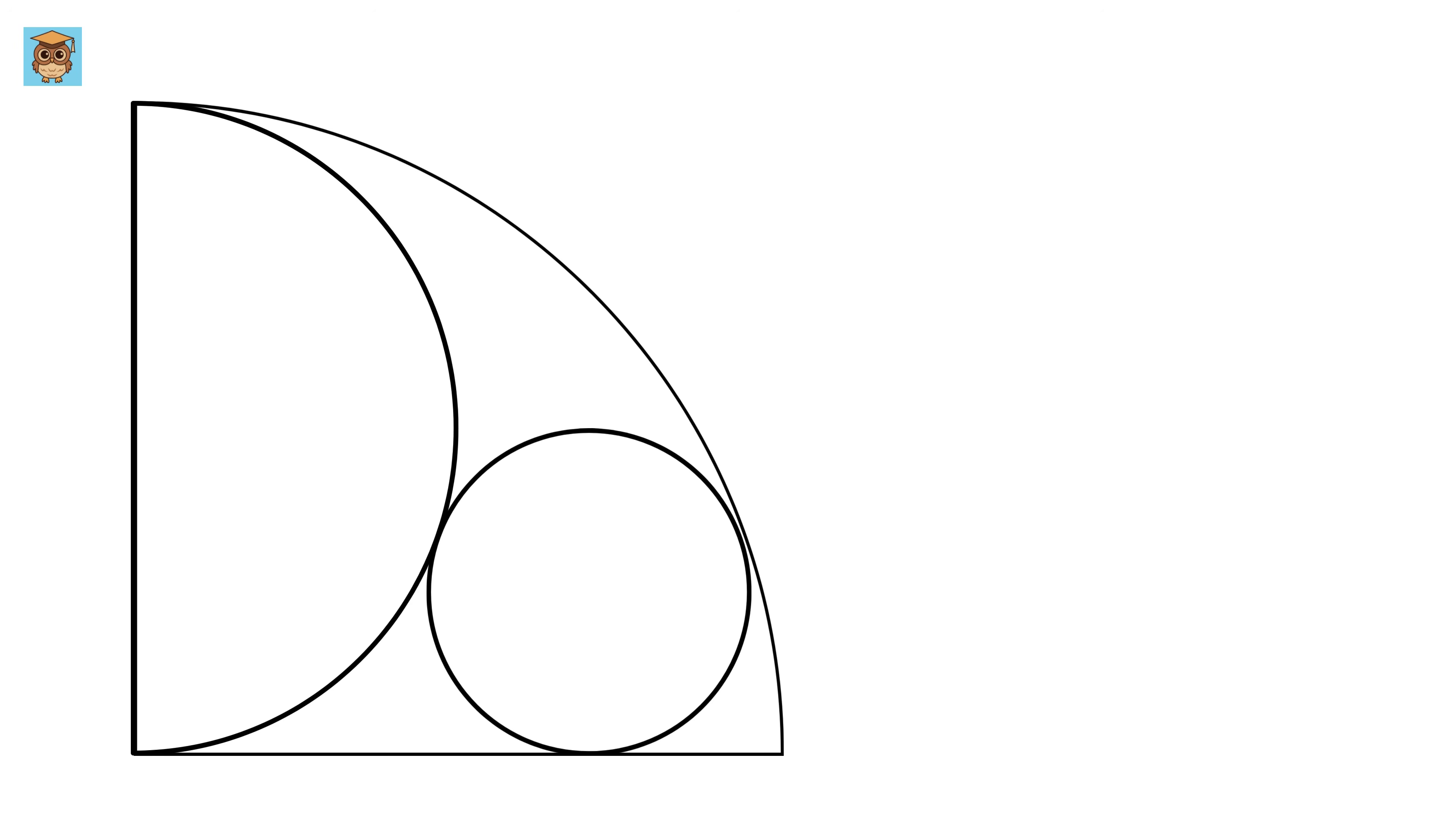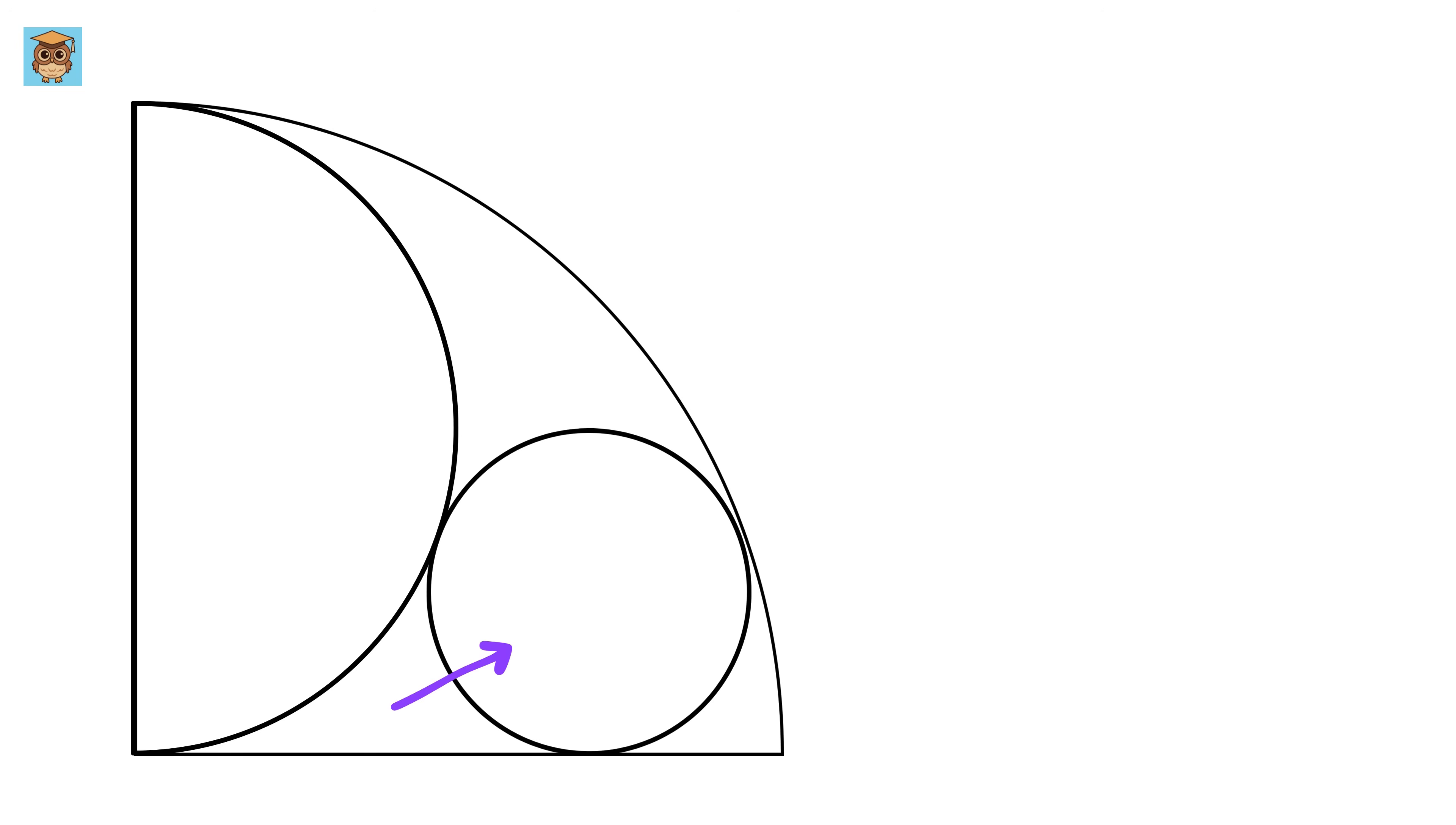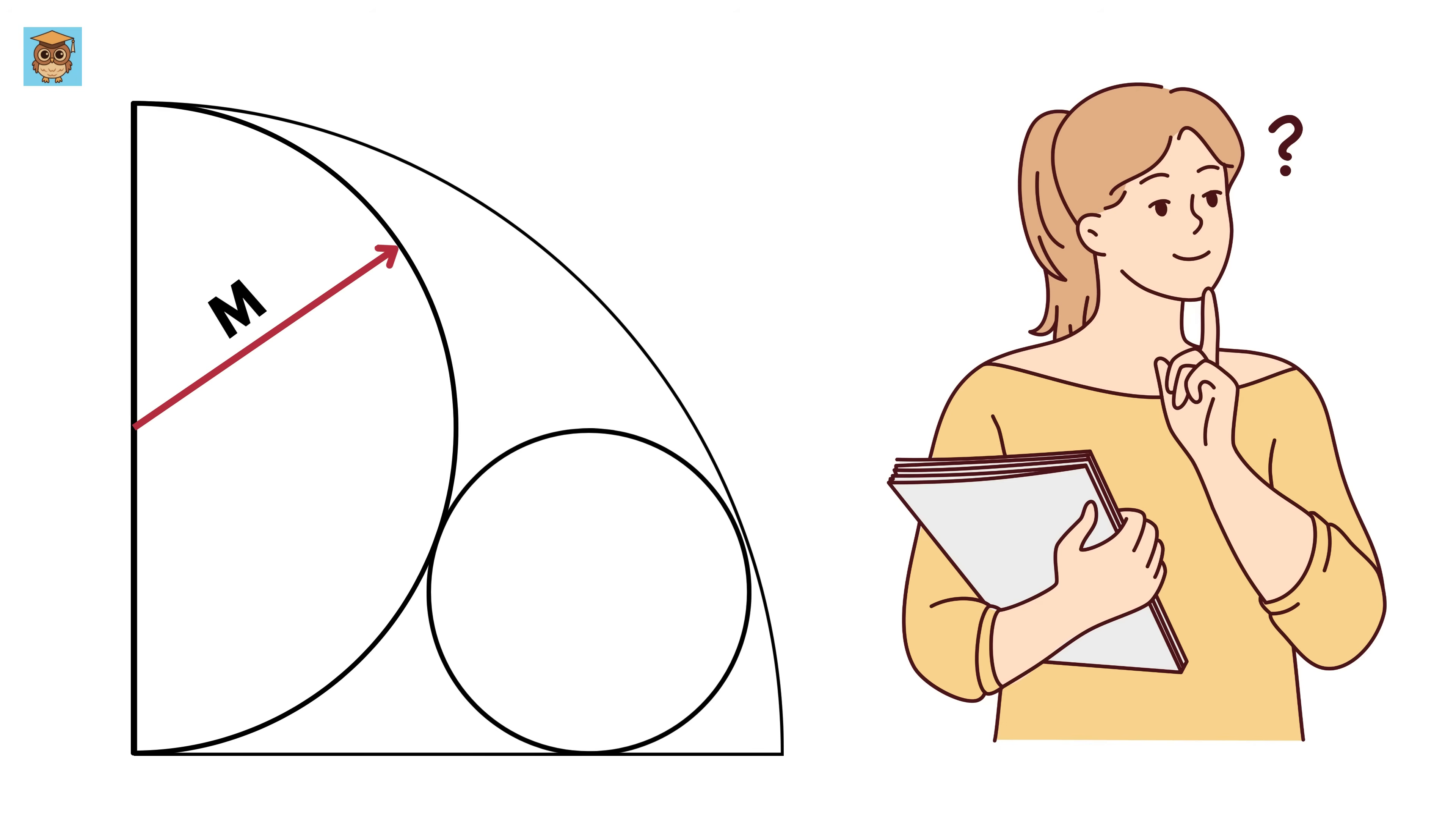This circle and the semicircle are externally touching each other at this point, and this circle is internally touching the quarter circle at these two points. The radius of this semicircle is m units and our job is to find out the value of the radius of this circle. So can you solve it?